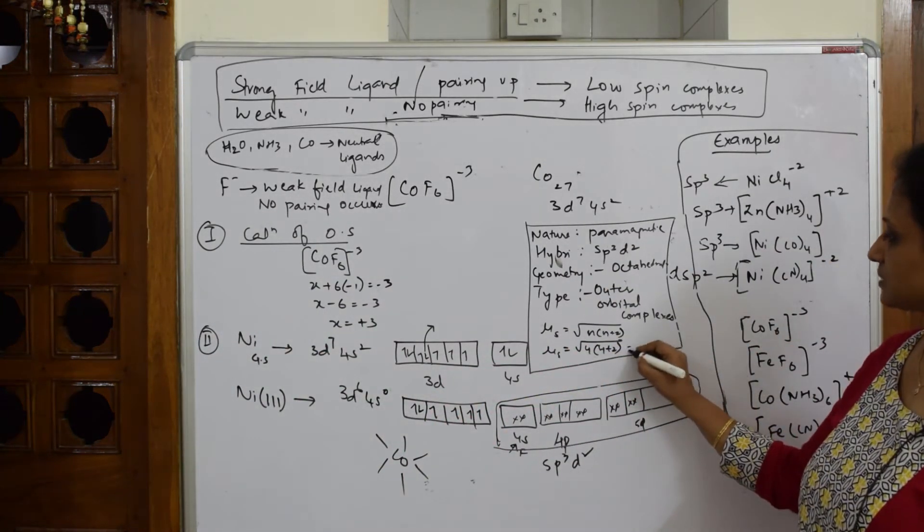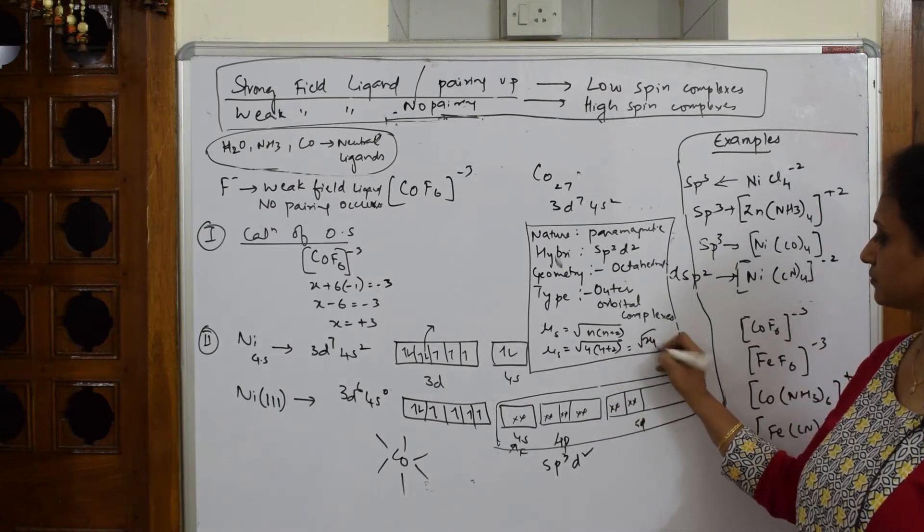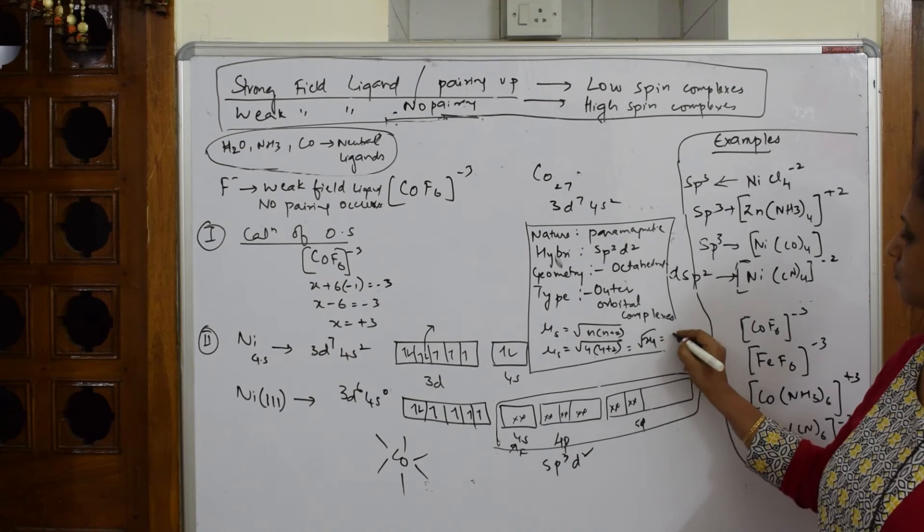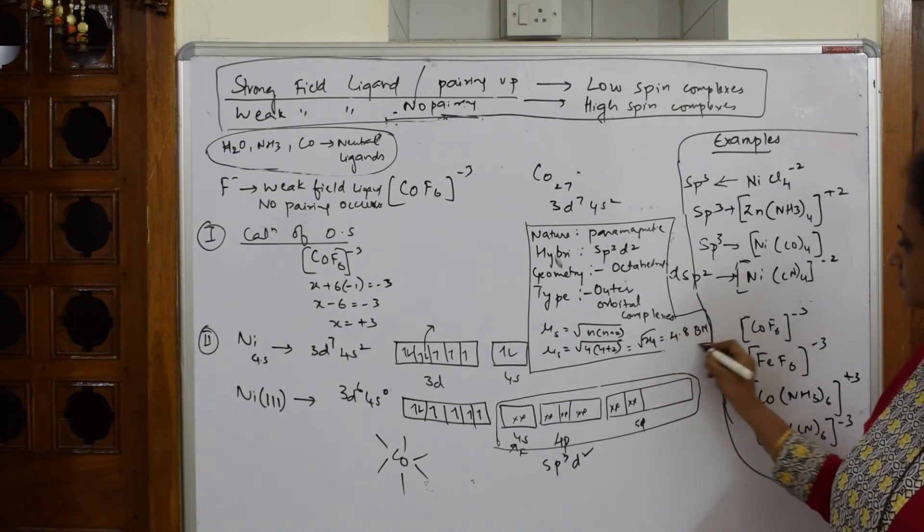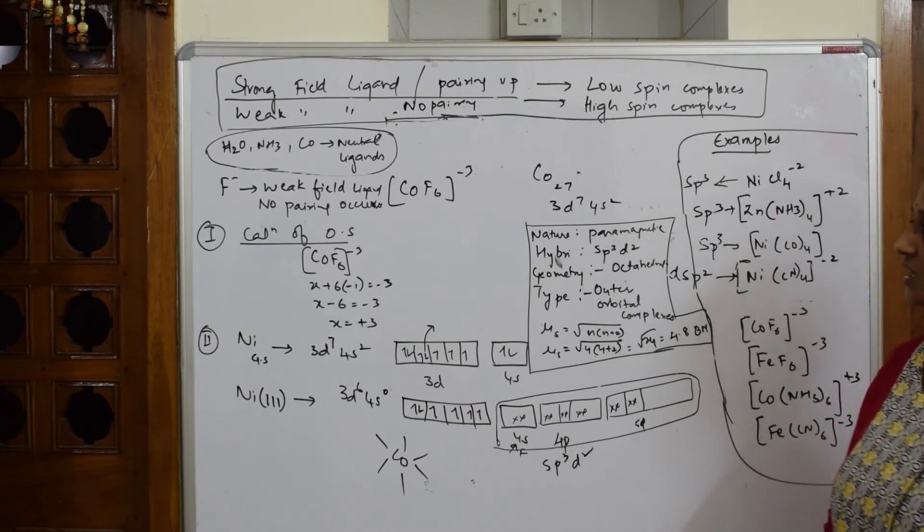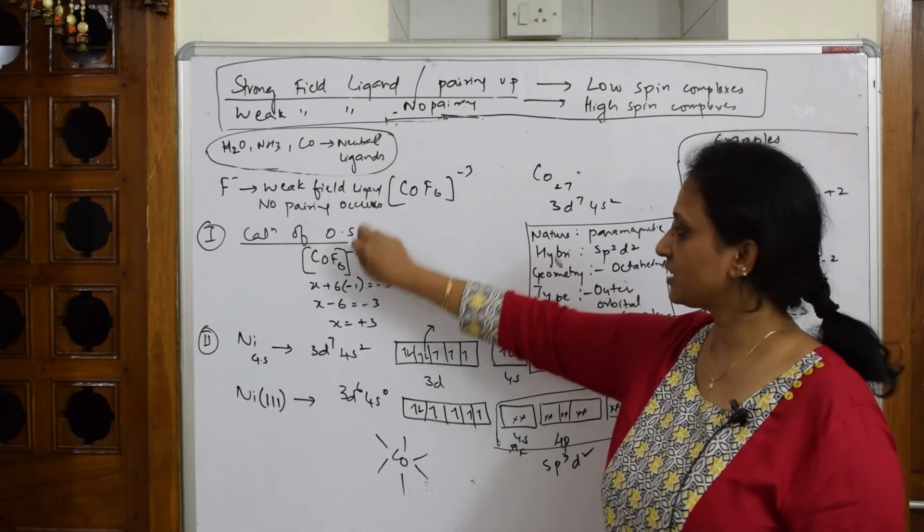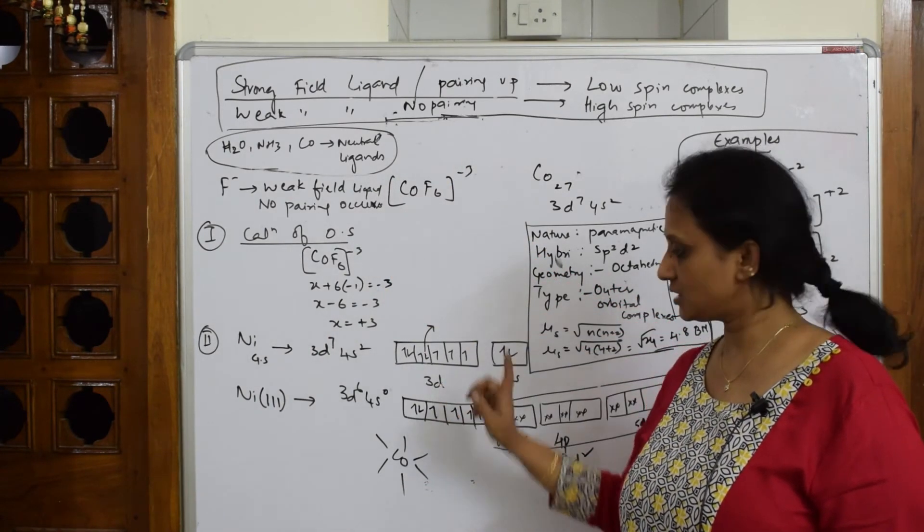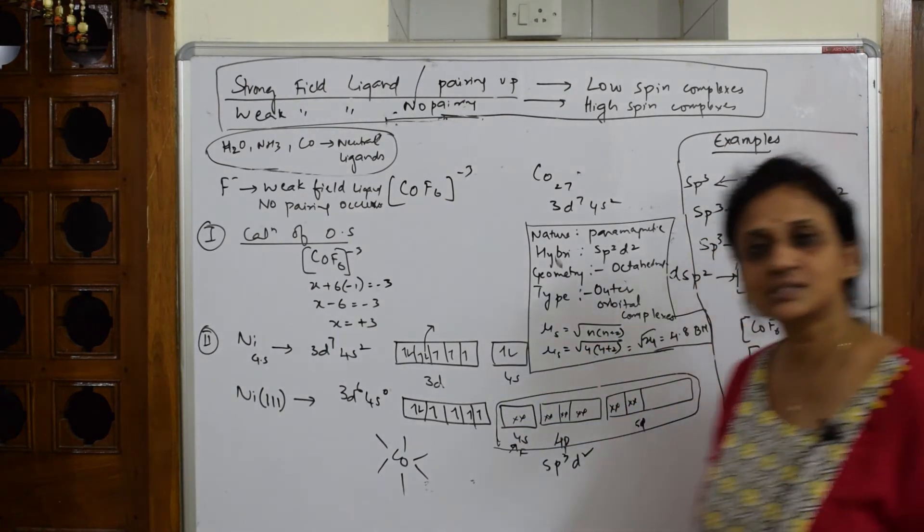This becomes 6, 24, root 24, which equals 4.8 Bohr magneton. That's it. So this is how you're going to present your whole answer. First, most important: copy the complex clearly, calculate the oxidation state, write the ground state, write the excited state, show the parameters. Your answer is complete.